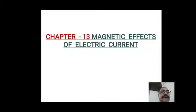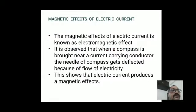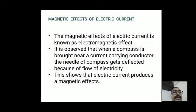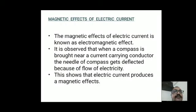In this video I am going to teach you Lesson 13: Magnetic Effects of Electric Current. The magnetic effects of electric current is known as the electromagnetic effect. It is observed that when a compass is brought near a current-carrying conductor, the needle of the compass gets deflected because of the flow of electricity. This shows that electric current produces a magnetic effect.